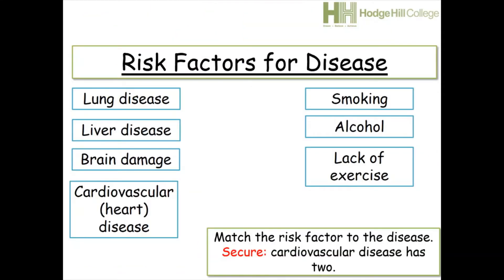Risk factors for disease: a risk factor is something that will increase the likelihood of you getting that disease. On the left you've got four non-communicable diseases — lung disease, liver disease, brain damage, and cardiovascular disease (heart disease). I want you to link these to three risk factors: smoking, alcohol, and lack of exercise. A tip: cardiovascular disease has two risk factors.